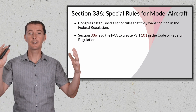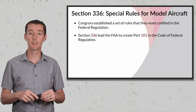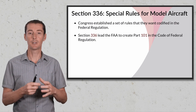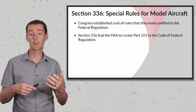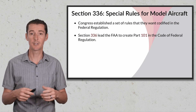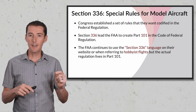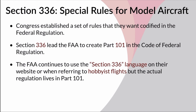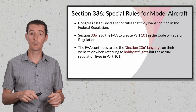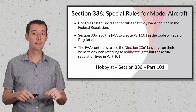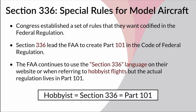These are all different sections of the Code of Federal Regulations dealing with FAA flight regulation. Flight is the big umbrella covered by the Federal Aviation Administration, and within that regulation there are different parts for different types of flying. Interestingly, even though Section 336 was designed by Congress, the FAA still uses that language on their website to refer to anything hobbyist-related, even though the regulation itself lives in Part 101. So hobbyist, Section 336, and Part 101 all mean exactly the same thing.